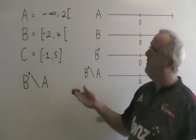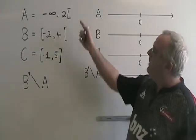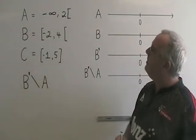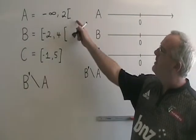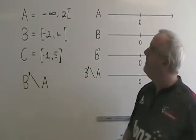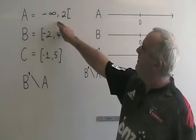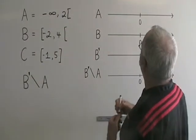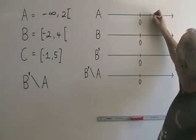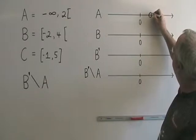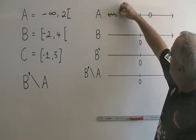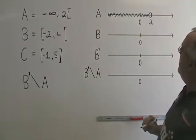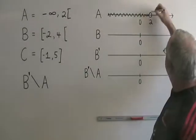We realize that the universe must be real numbers because the sets are given to us in this notation. The first step is for us to map set A on the number line. Set A is from negative infinity to two with the two not included. So I am shading from negative infinity to two on my number line. The two is an open circle because it is not included.